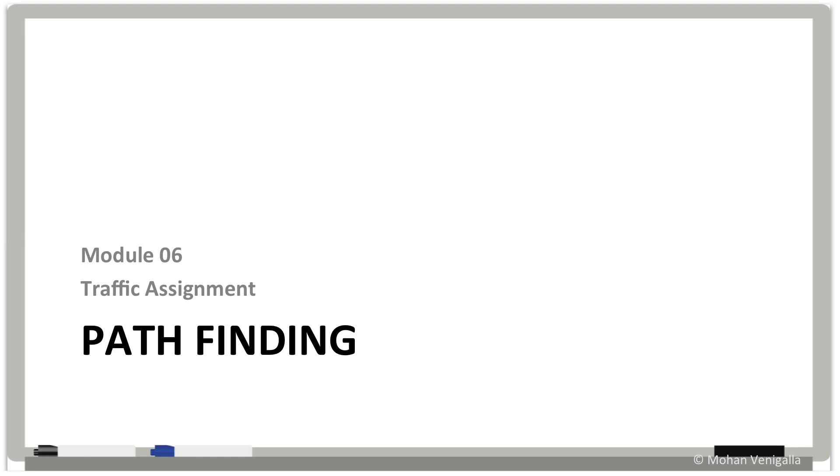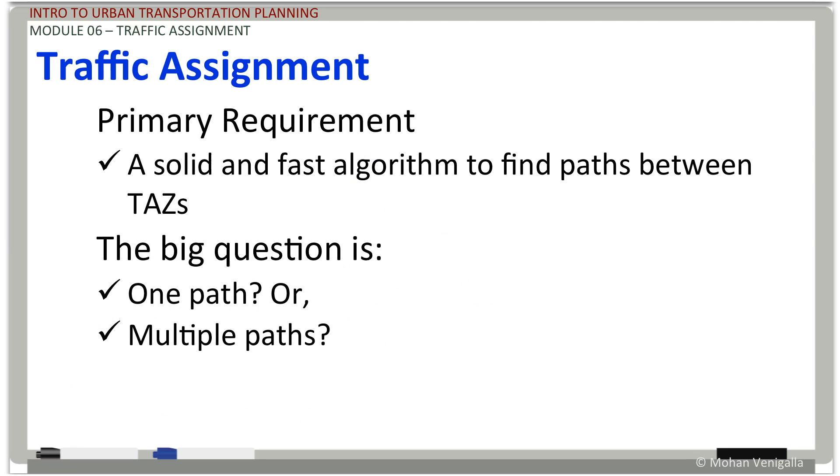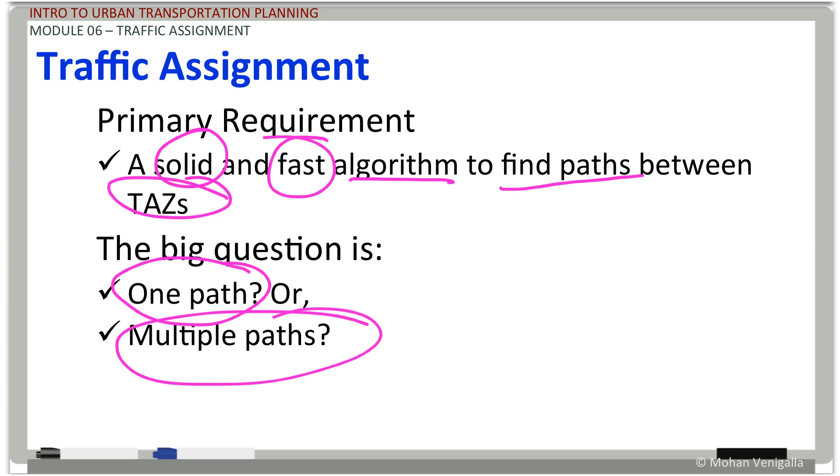Okay, welcome back. We are now in video number two of traffic assignment, which is module six. The topic here is pathfinding. The primary requirement for traffic assignment procedure to work properly is you should have a solid and very fast algorithm which will help you find paths between pairs of TAZs, and actually one TAZ to all other TAZs. The big question is, are we going to need one path or multiple paths?